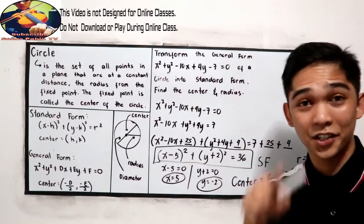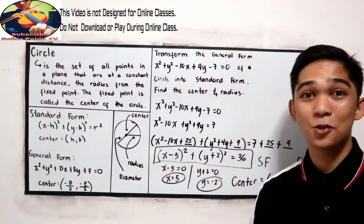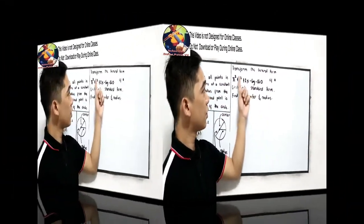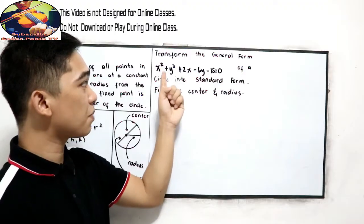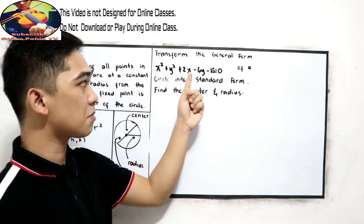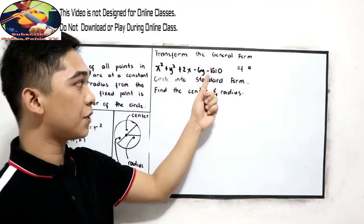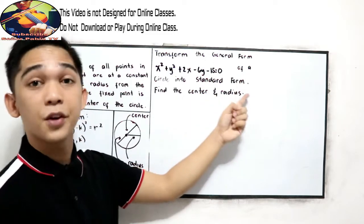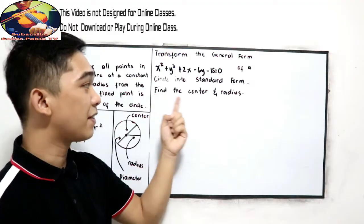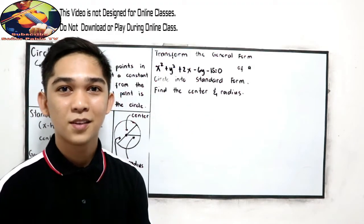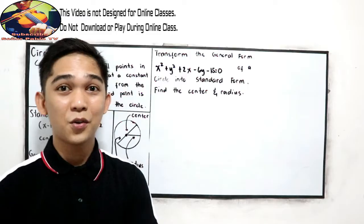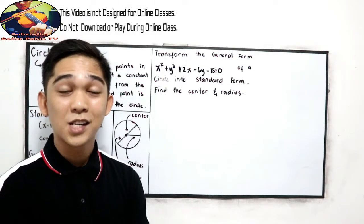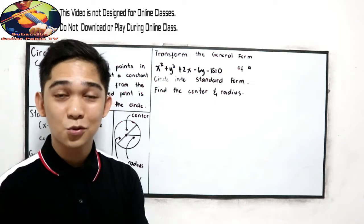Now it's your turn. Answer this problem: transform the general form x squared plus y squared plus 2x minus 6y minus 15 equals 0 of a circle into standard form. Find the center and the radius. Pause the video and answer this problem, then resume watching to check your answers.